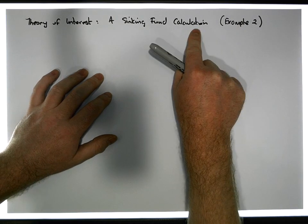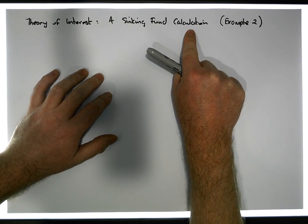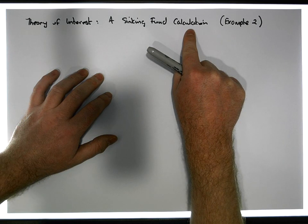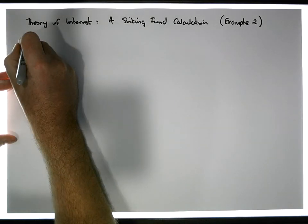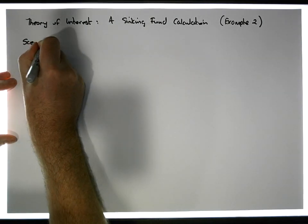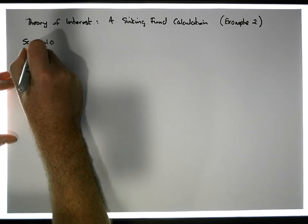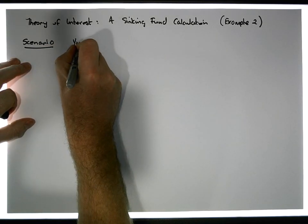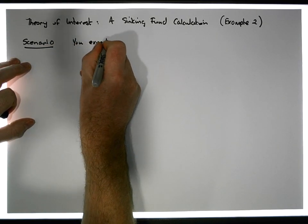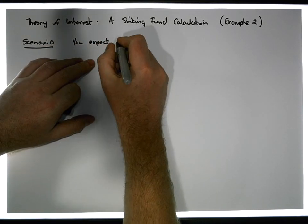What makes this different from the previous example is that this particular sinking fund will have an initial investment associated with it. So the scenario is dissimilar to the scenario of our previous example.